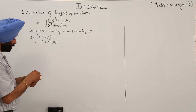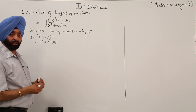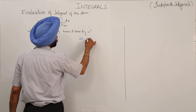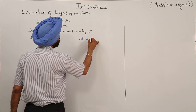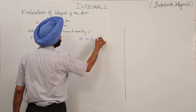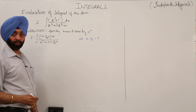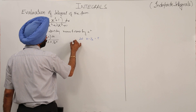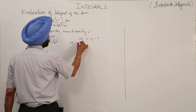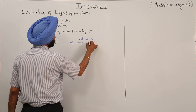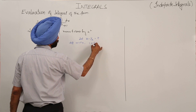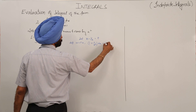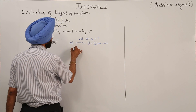Now, in the numerator we are having 1 + 1/x². So what are we going to suppose? Let x minus 1/x equal to t. Differentiating with respect to x, we get: (1 + 1/x²) dx = dt.